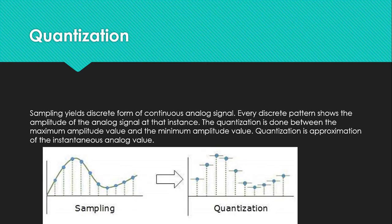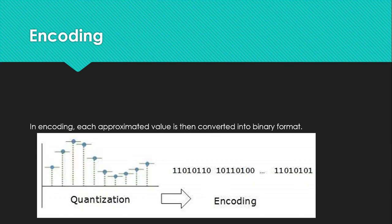The quantization is done between the maximum amplitude value and the minimum amplitude value. Quantization is an appropriate approximation of the instantaneous analog value.